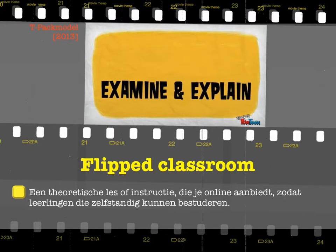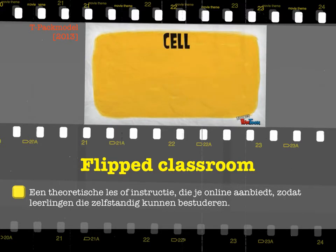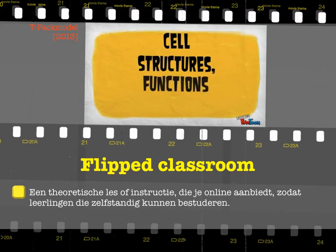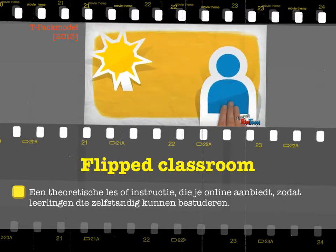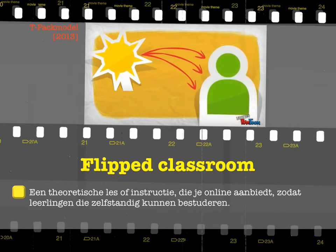Your task: examine and explain how cell structures, functions, and activities will need to be altered for human cells to perform photosynthesis.